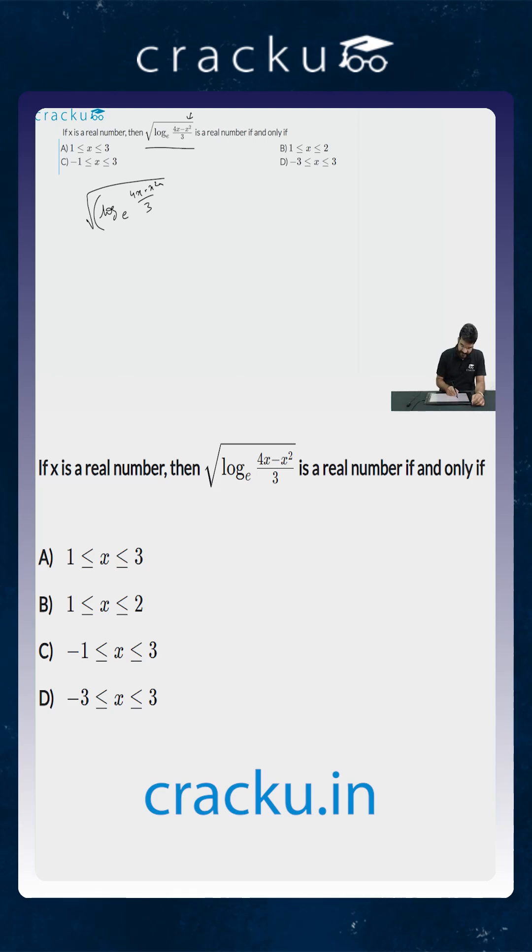For this to be a real number, the term of which we are taking the square root should be greater than 0. That is, log of 4x minus x square by 3 to the base e has to be greater than or equal to 0, only then will the square root be defined.